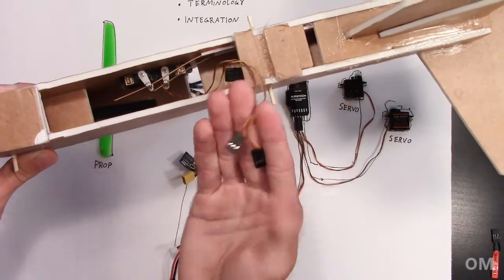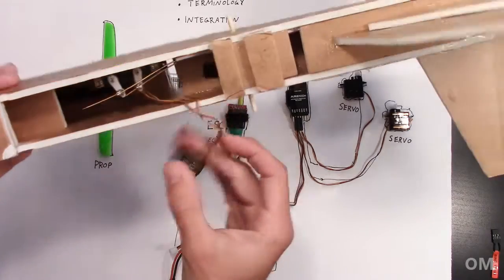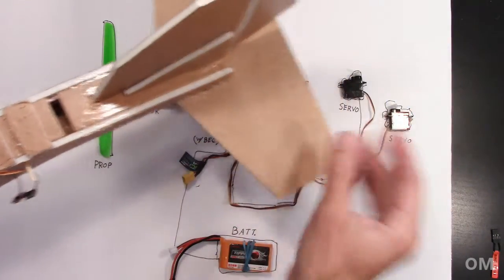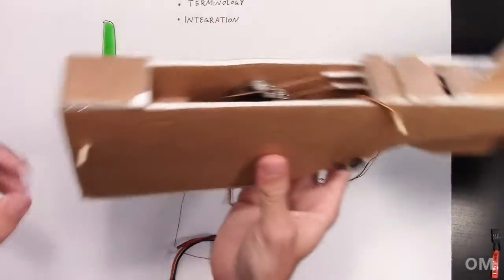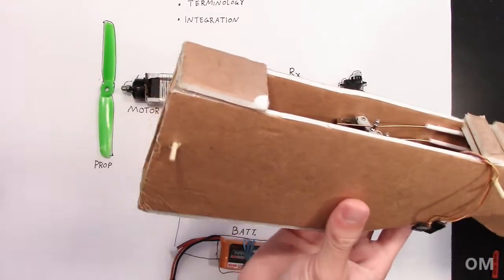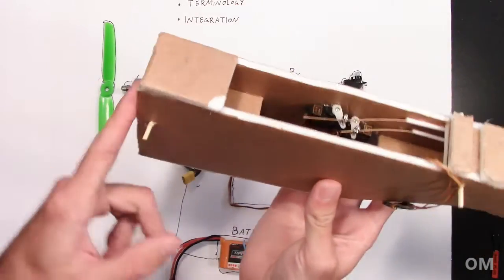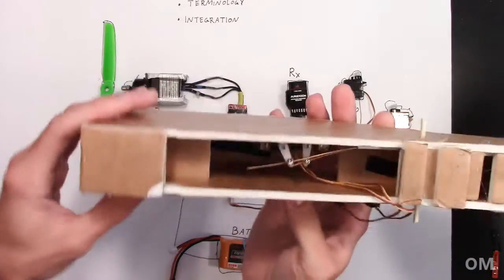And they connect to our receiver with these connections here. We're going to talk about that in just a second. So we need to make the control surfaces move and we need to make what would be the motor right here. We need to make the motor spin so that it can go forward and produce thrust.